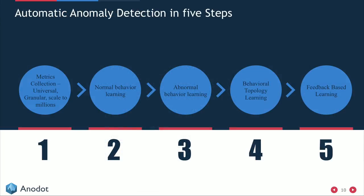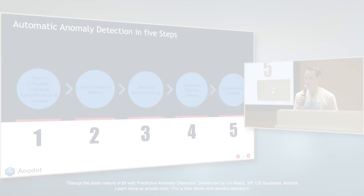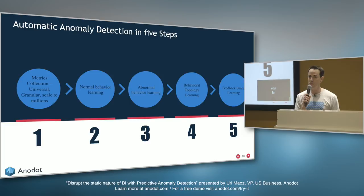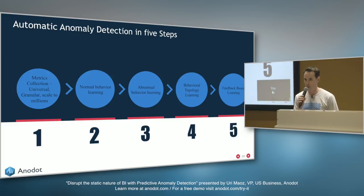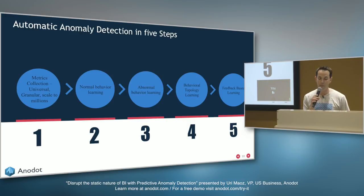We're talking about five steps to implement anomaly detection: metric collection, normal behavior learning, abnormal behavior learning, behavioral topology learning, and feedback-based learning. I will now explain each of these steps and what is important to pay attention to when implementing them.